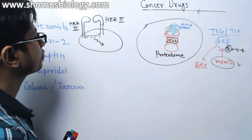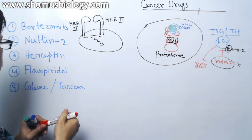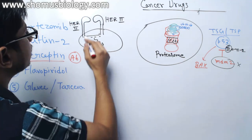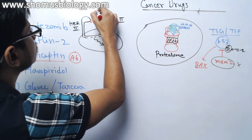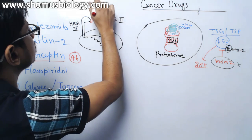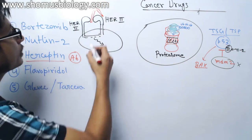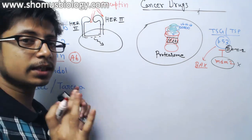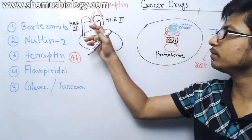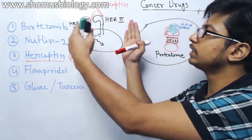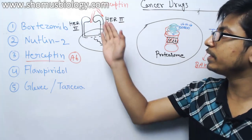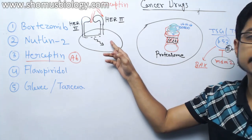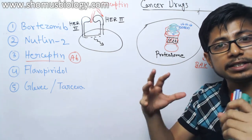Two HER2 receptors must dimerize with each other to send a signal inside the cell that triggers growth and division. Herceptin, as a monoclonal antibody, binds to one of the HER2 receptors and prevents the two receptors from dimerizing. As it prevents HER2 dimerization, the signal cannot pass inside the cell and the cell growth signal is turned off.